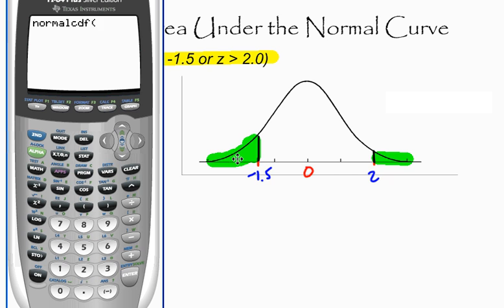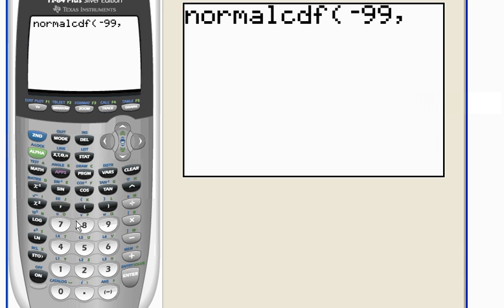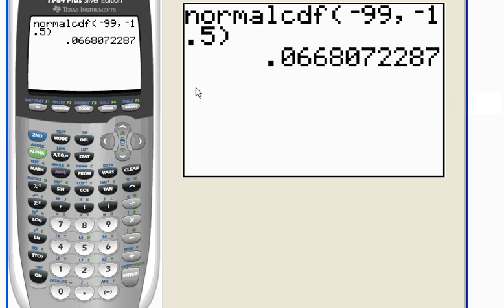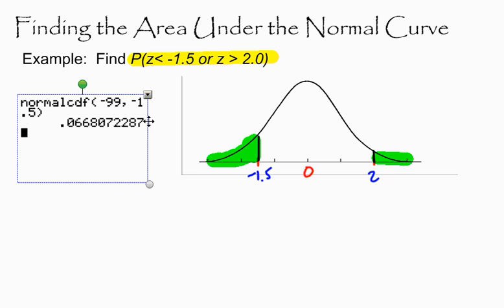And to find the area here on the left-hand side, I need my two boundaries. And I'm going to use negative 99 and negative 1.5. So let's go negative 99, comma, which is above the 7, and negative 1.5. Close my parentheses, and when I hit enter, this gives me the area to the left of negative 1.5, the shaded region on the left-hand side.